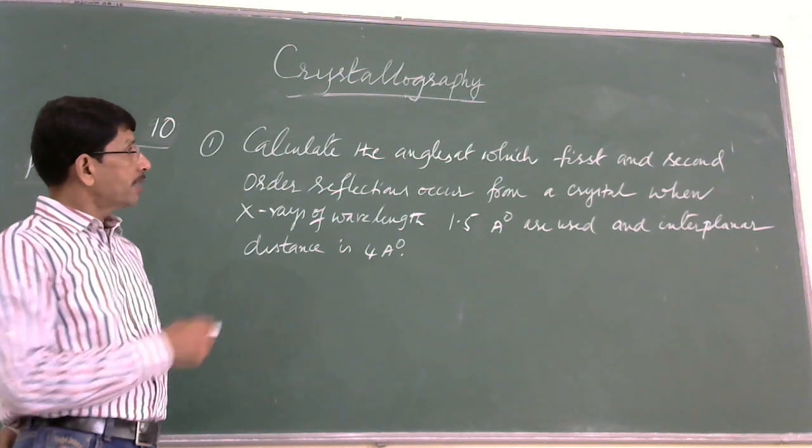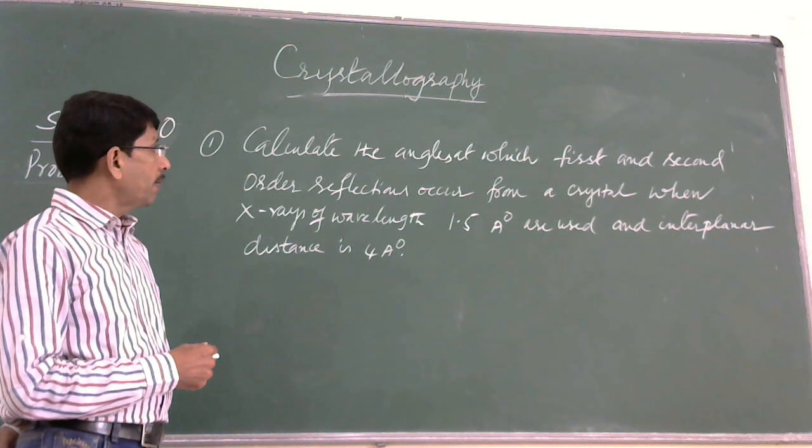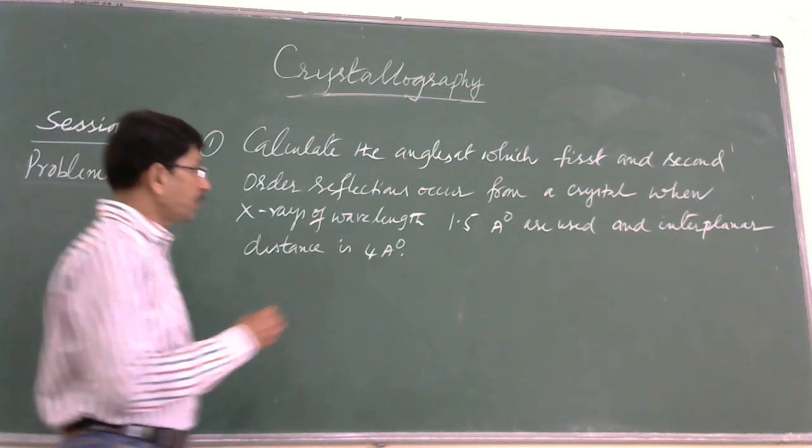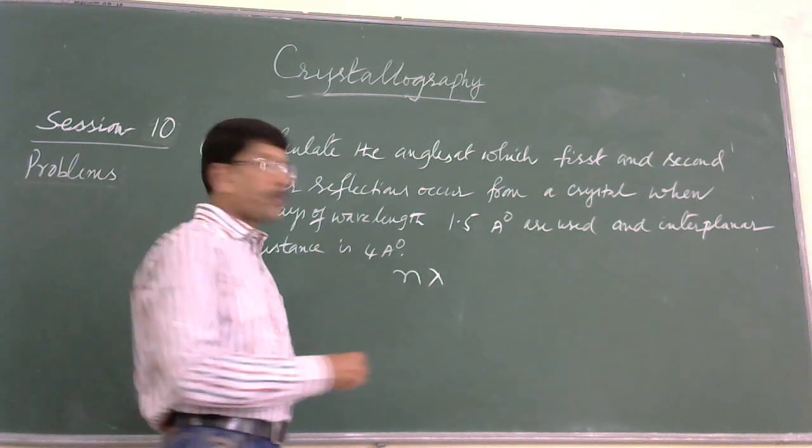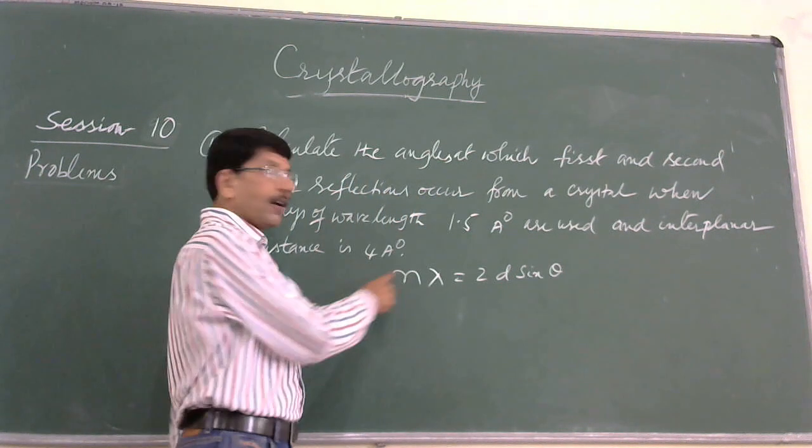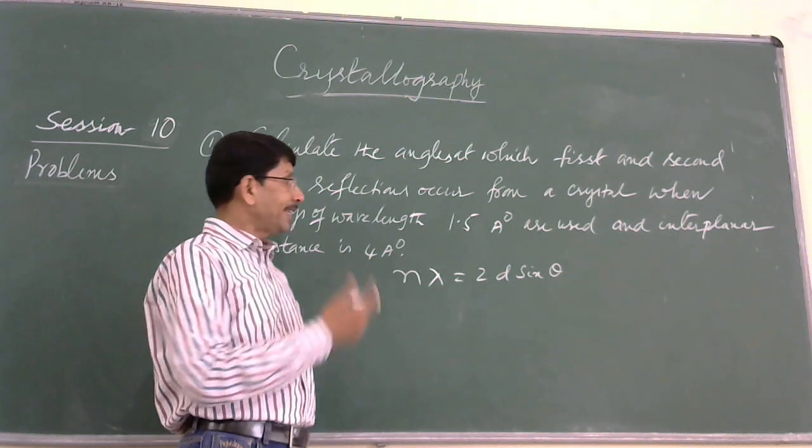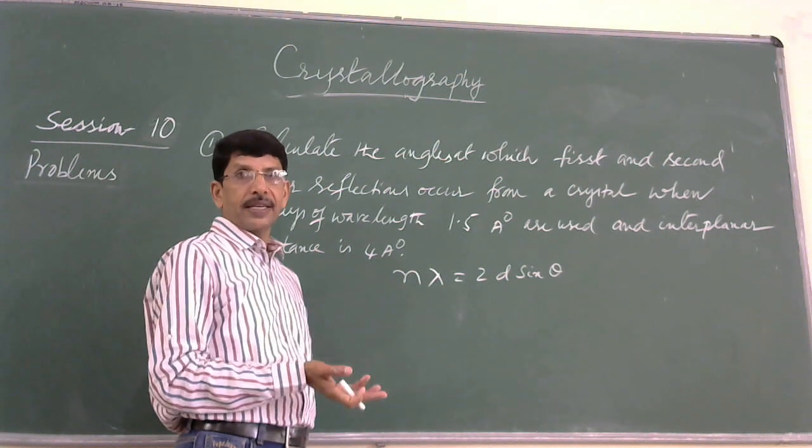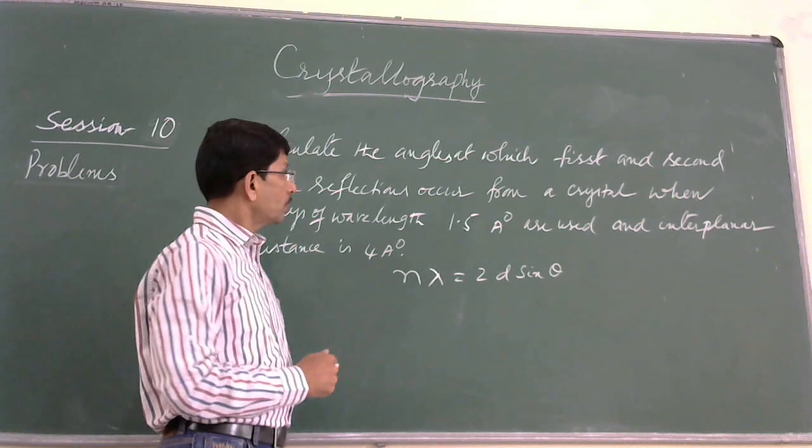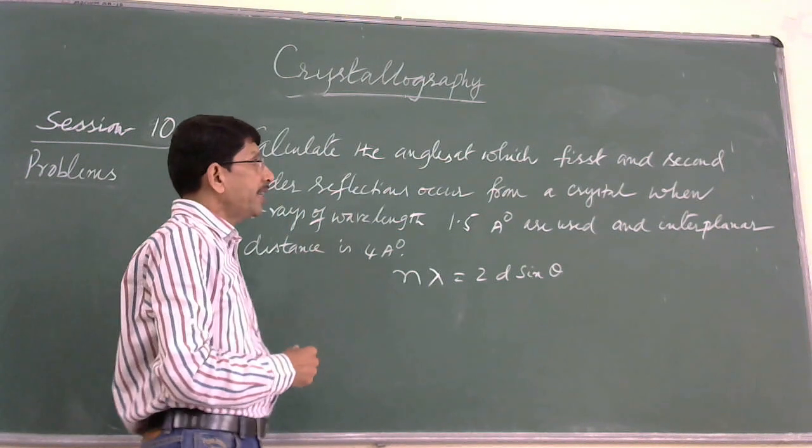The first problem here is calculate the angle at which first and second order diffraction occur on a crystal when X-rays of 1.5 angstroms are used and interplanar distance is 4 angstroms. To solve this problem, we have to consider the Bragg equation, which is N lambda equals 2d sine theta, where N is order of reflection, lambda is wavelength of X-rays used, d is interplanar distance, and theta is the glancing angle at which the X-ray is incident on the crystal surface. This is Bragg's equation, and we are calculating the angles at which first and second order diffraction occur.